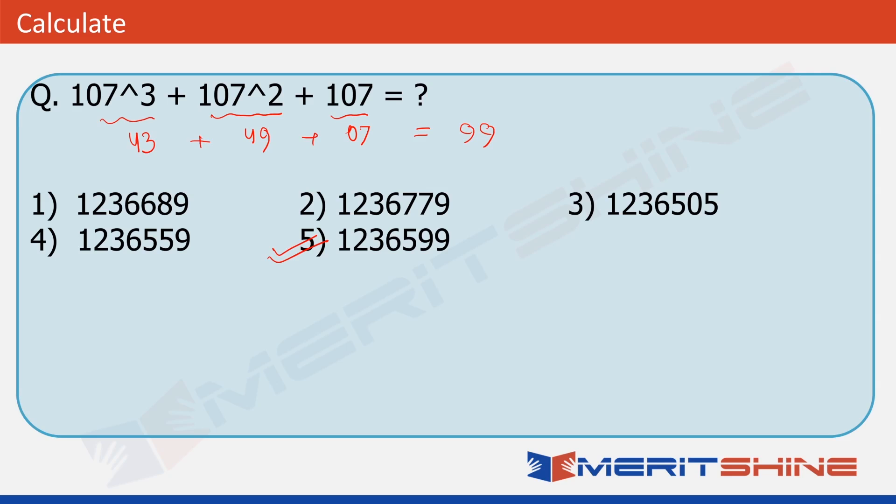For those who have not seen our tutorial as yet, finding 107 cube is also very easy. So, again, the answer is in three parts. For the second and third part, you have to remember that they will each have two digits. The third part would be 7 cube. The second part would be 3 times 7 square. And the first part would be 100 plus 3 times 7. That is it. So, you have 343 here. 49 into 3 is 147. And here, you have 121. Now, you have to remember that it could have only two digits. So, one digit each will be shifted.